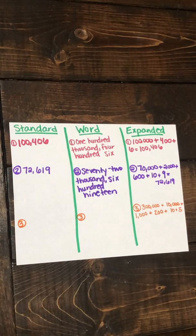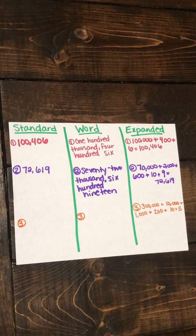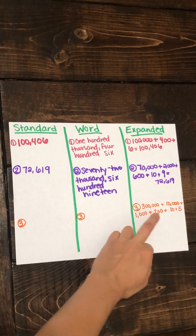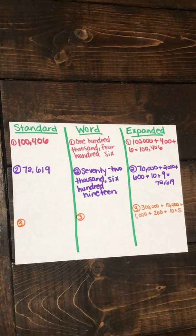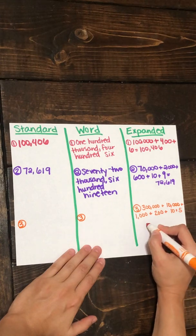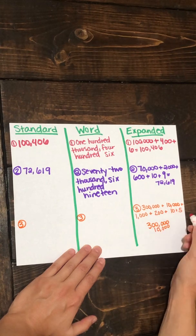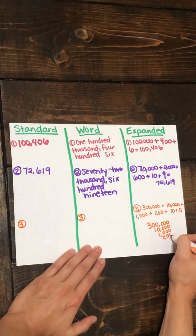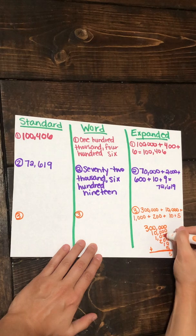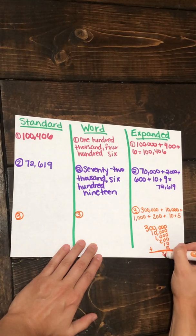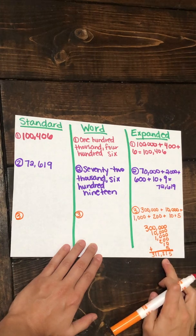Let's look at our final example. We are given expanded form and we need to turn that into standard form. We have 300,000 + 10,000 + 1,000 + 200 + 10 + 5. I'm going to help myself out by writing it vertically and making sure I line up my place values. If I were to add all of these together, that gives us our standard form.